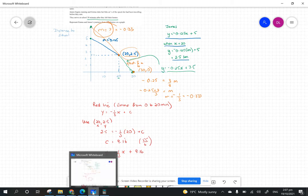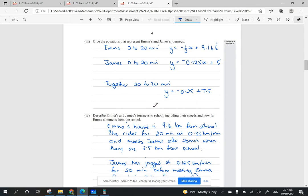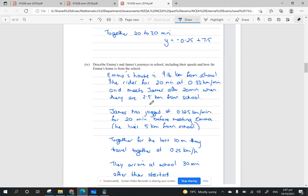I put my answers on this screen. For the first 20 minutes, 0 to 20, Emma has this equation. James for the first 20 minutes has that equation, and together for the last 10 minutes they have this equation. You can pause the video if you need to.